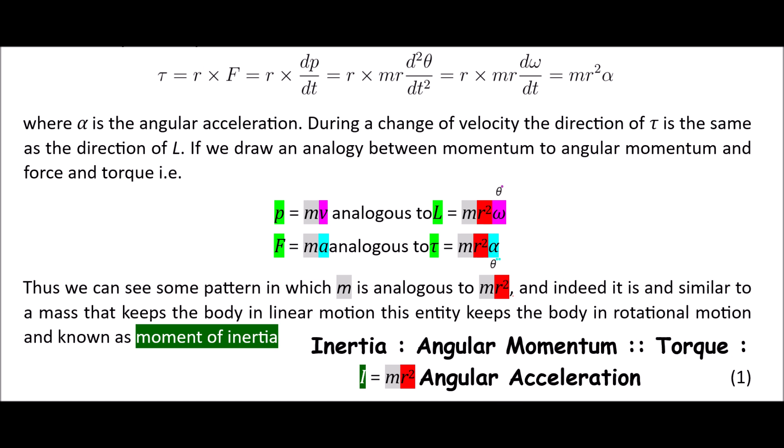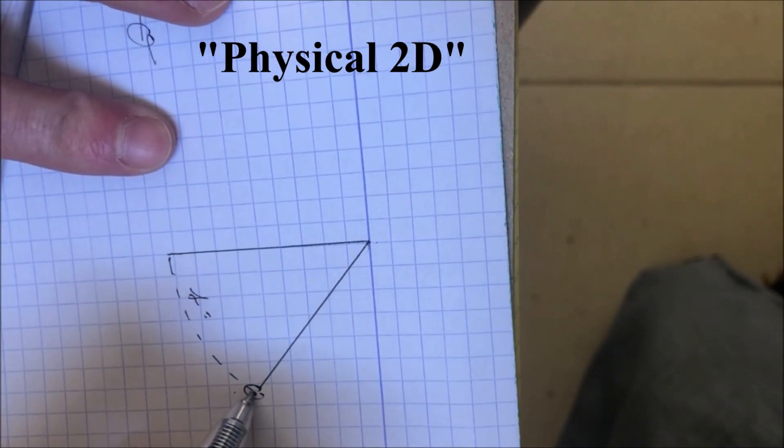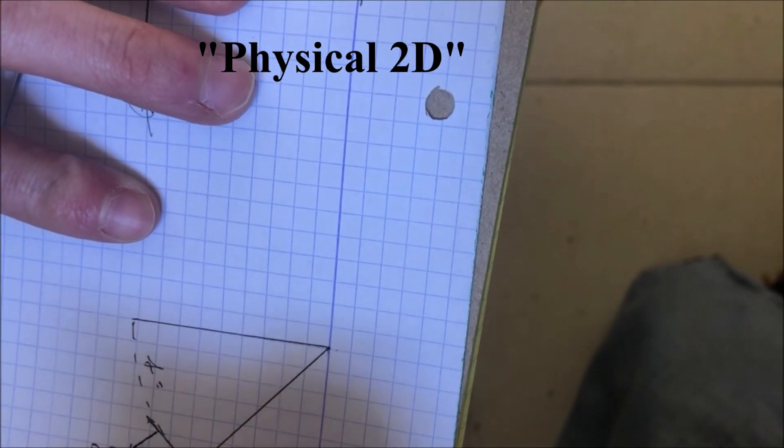Inertia is to angular momentum as torque is to angular acceleration. The first is the physical free-body diagram of the pendulum.